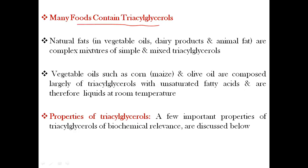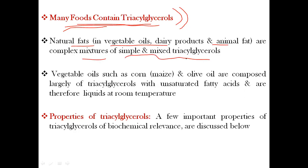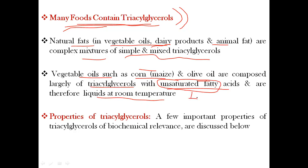Many foods contain triacylglycerols. Natural fats in vegetable oil, dairy products, and animal fats are complex mixtures of simple and mixed triacylglycerols containing different types of fatty acids. Vegetable oils such as corn oil and olive oil are composed largely of triacylglycerols with unsaturated fatty acids and are therefore liquid at room temperature. Unsaturated fatty acids contain two or more double bonds.